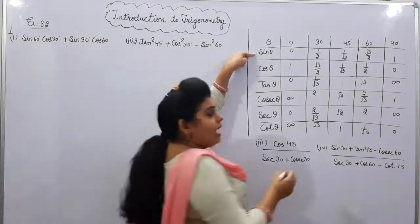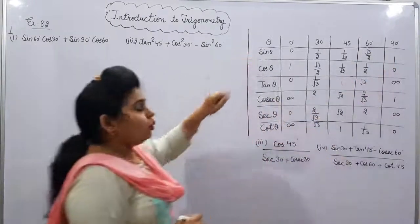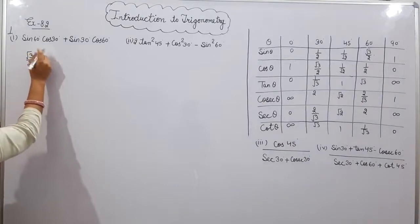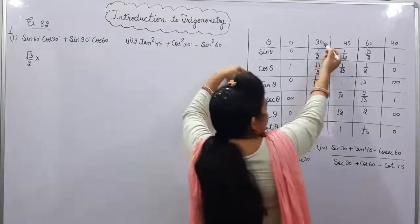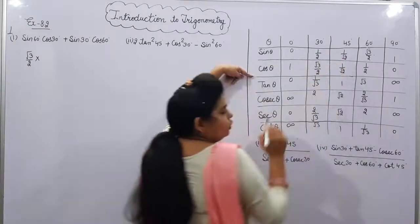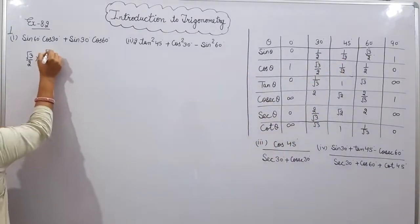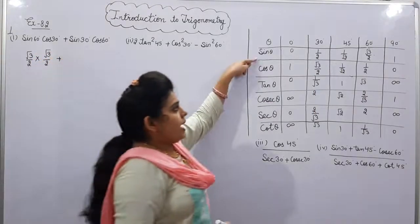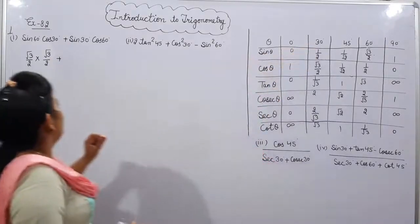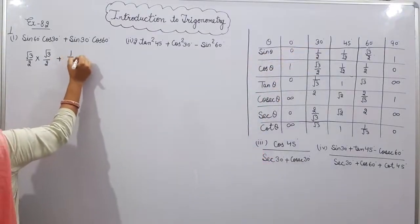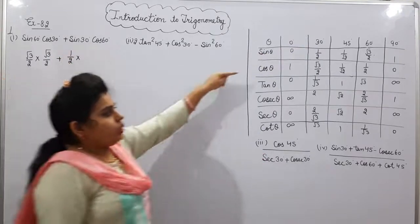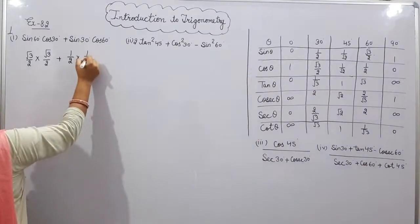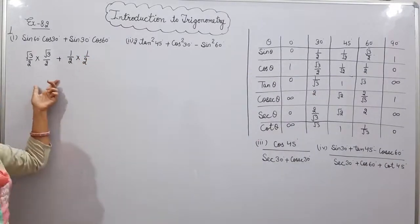Sin 60 is √3/2. Into cos 30 — cos 30 is also √3/2. Plus sin 30, which is 1/2, into cos 60, which is 1/2.